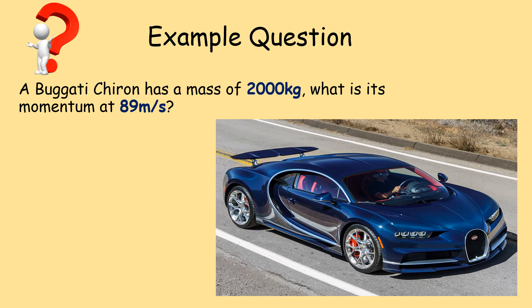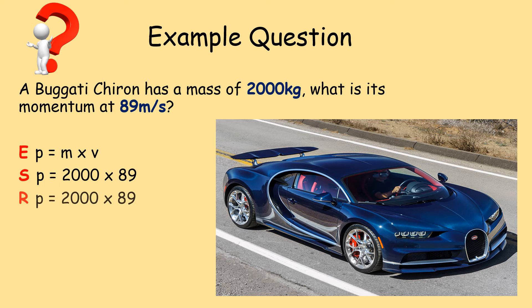I've been informed I pronounced this car incorrectly — it's the Bugatti Chiron. The Bugatti Chiron has a mass of 2,000 kilograms. What is its momentum at 89 meters per second — roughly 200 miles an hour? Using SROE: equation is P equals MV. Substituting: momentum equals 2,000 multiplied by 89. No rearrangement needed — momentum equals 2,000 times 89, which gives a whopping 178,000 kilograms meters per second.